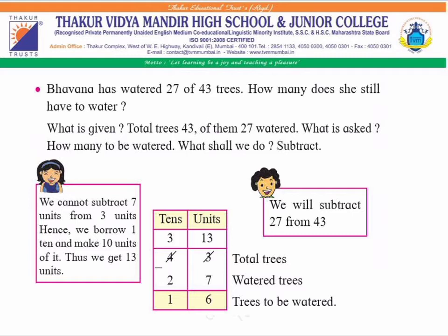We cannot subtract seven units from three units. Hence, we borrow one tan and make ten units, thus we get 13 units. Children, three is a smaller number and seven is a bigger number, so we have to borrow one tan.